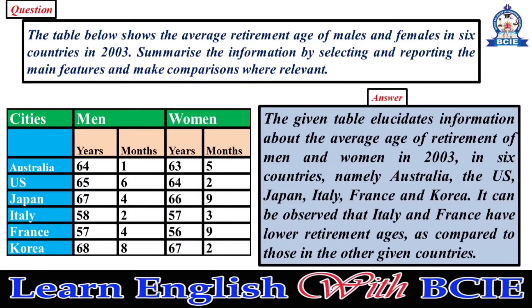The given table elucidates information about the average age of retirement of men and women in 2003 in six countries, namely Australia, the US, Japan, Italy, France, and Korea. It can be observed that Italy and France have lower retirement ages as compared to those in the other given countries.